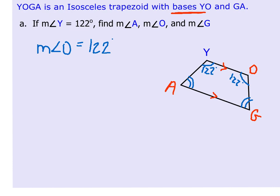I'm going to add 122 plus 122, and that gives me 244 degrees. Then I'm going to subtract that 244 degrees from 360, and we get 116 degrees.